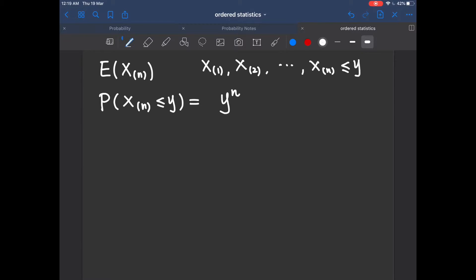Okay, so we will be able to find the PDF of Xn at the value y. That is just to differentiate the probability with respect to y. So that will be n multiply y to the power of n minus 1.